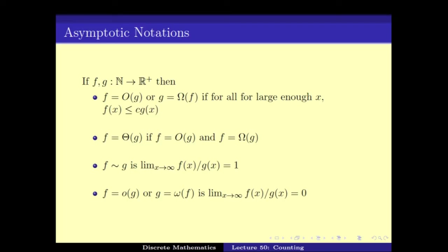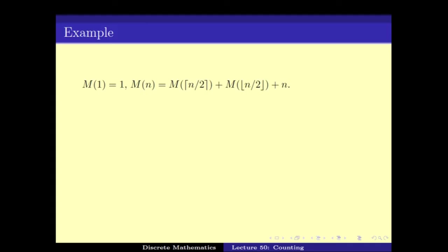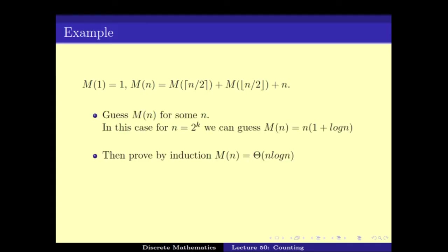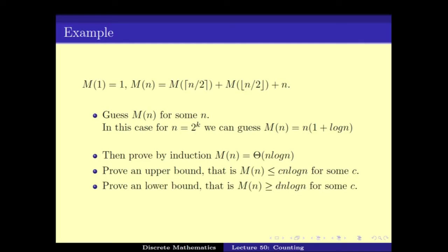Asymptotic notations have been used quite extensively in algorithms and in various other fields. We saw how one can use asymptotic notations to solve recurrence relations not exactly but asymptotically — for example, proving that T(n) is Theta of n log n. The way to prove it is by induction. So all of these things involve guessing the solution and then proving by induction, either the exact value or the asymptotic value.